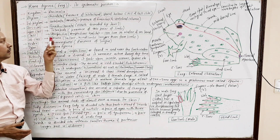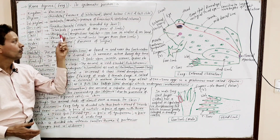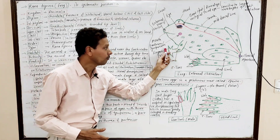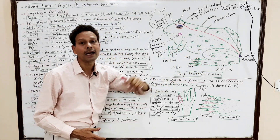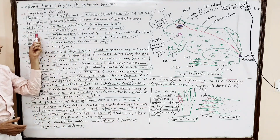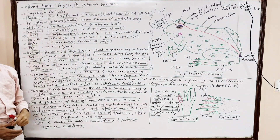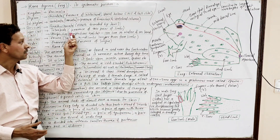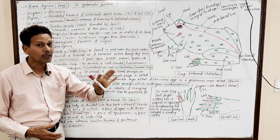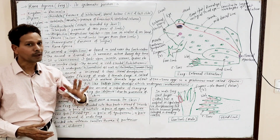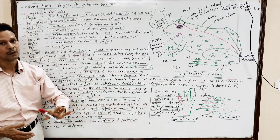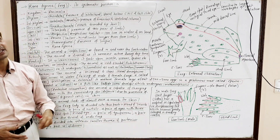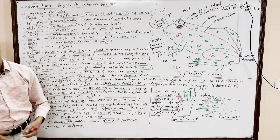Superclass: Tetrapoda — presence of two pairs of limbs, a pair of forelimbs and a pair of hind limbs. Class: Amphibia. Dear students, class Amphibia means having both habitats — the animal is found in both terrestrial (on land) as well as aquatic (fresh water) conditions.